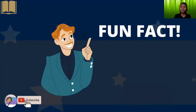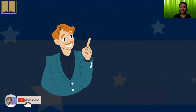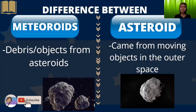Let's have some fun fact again. What is the difference between meteoroids and asteroids? Meteoroids are debris or objects from asteroids, while asteroids are moving objects in outer space.